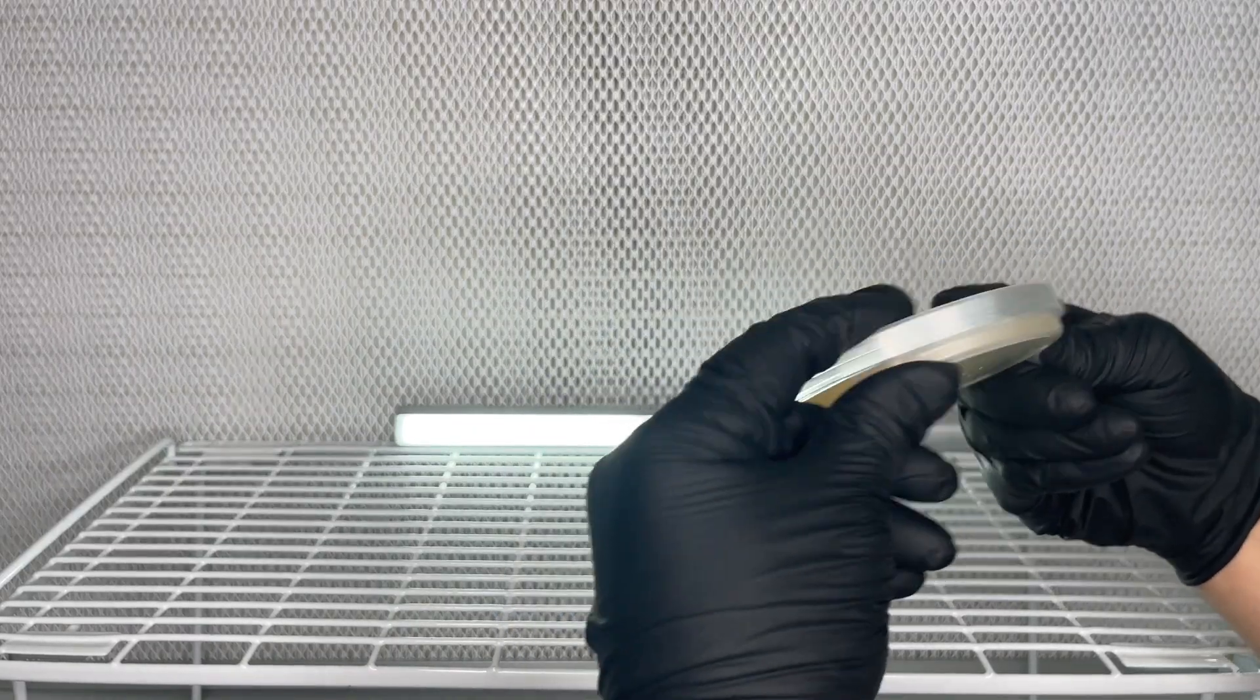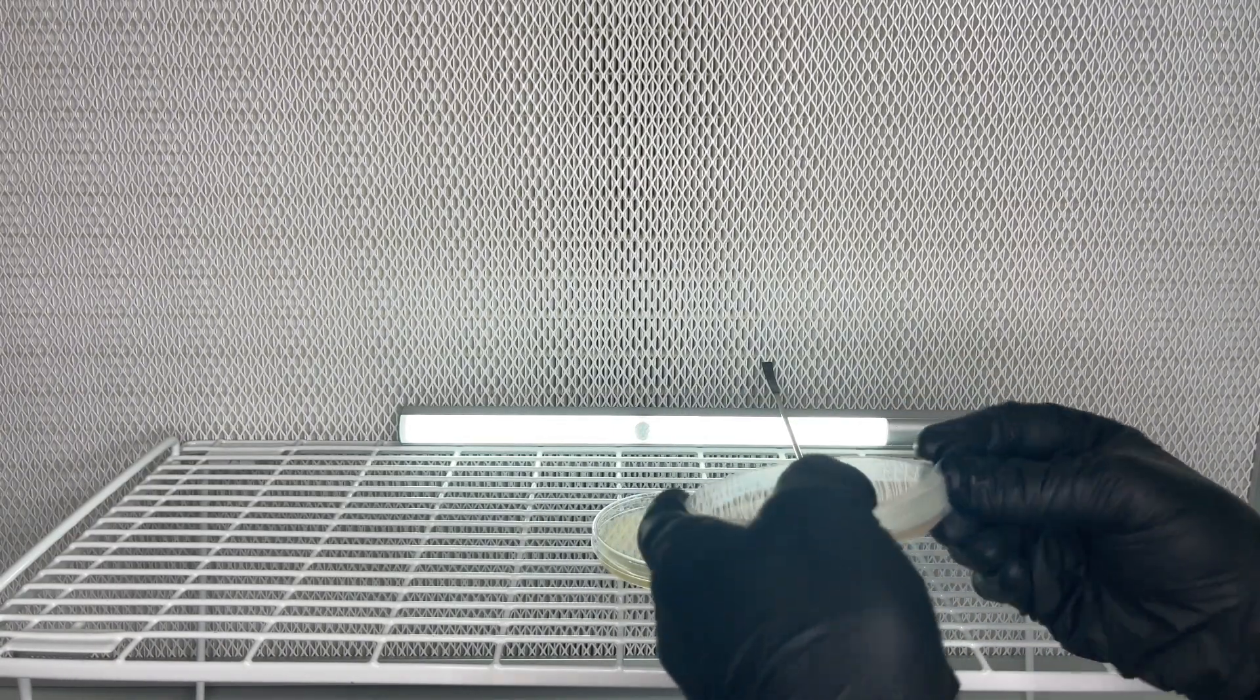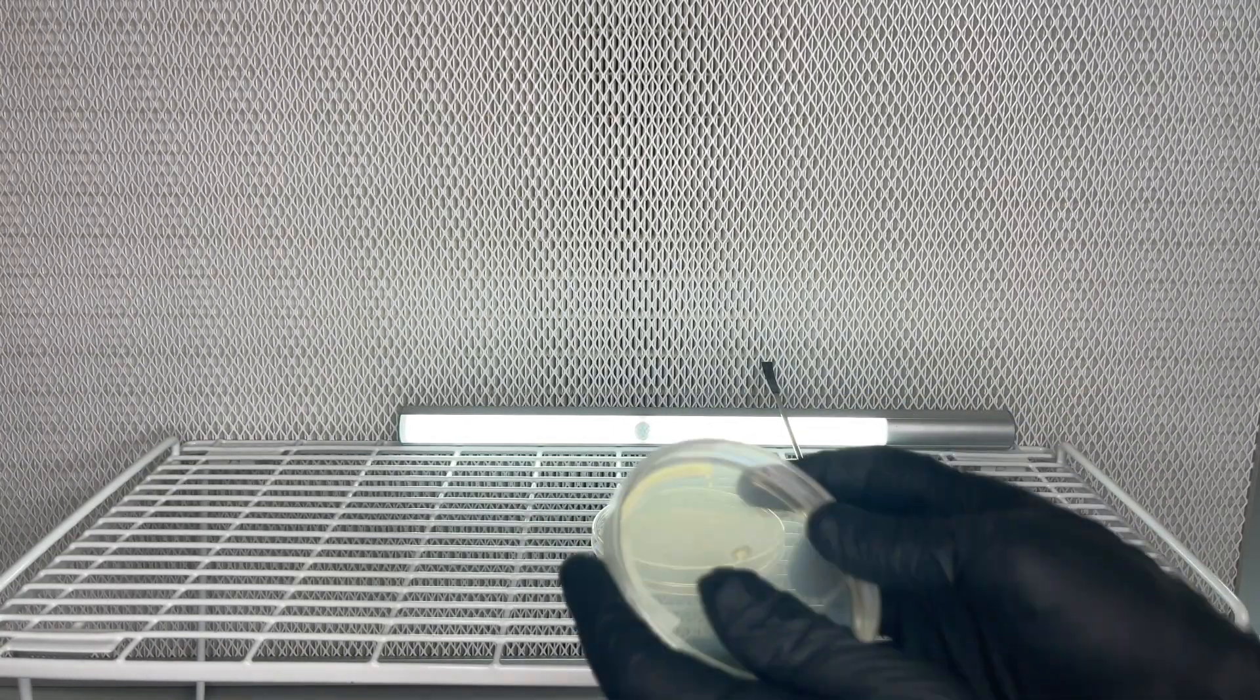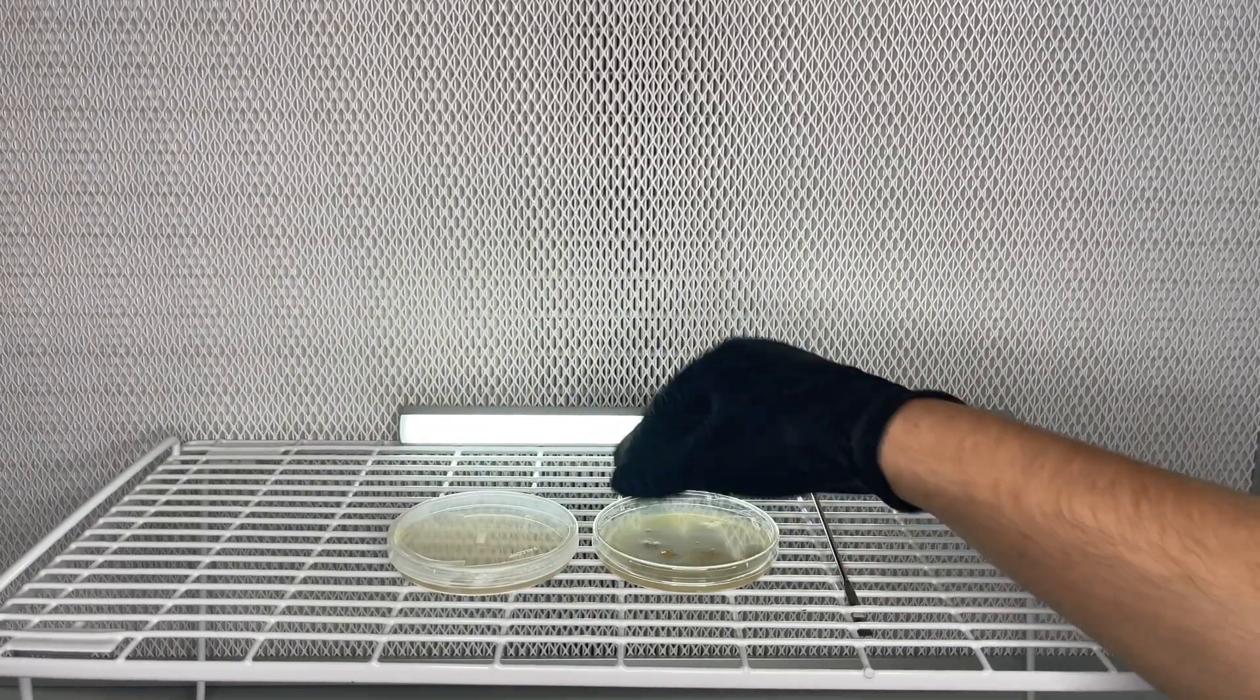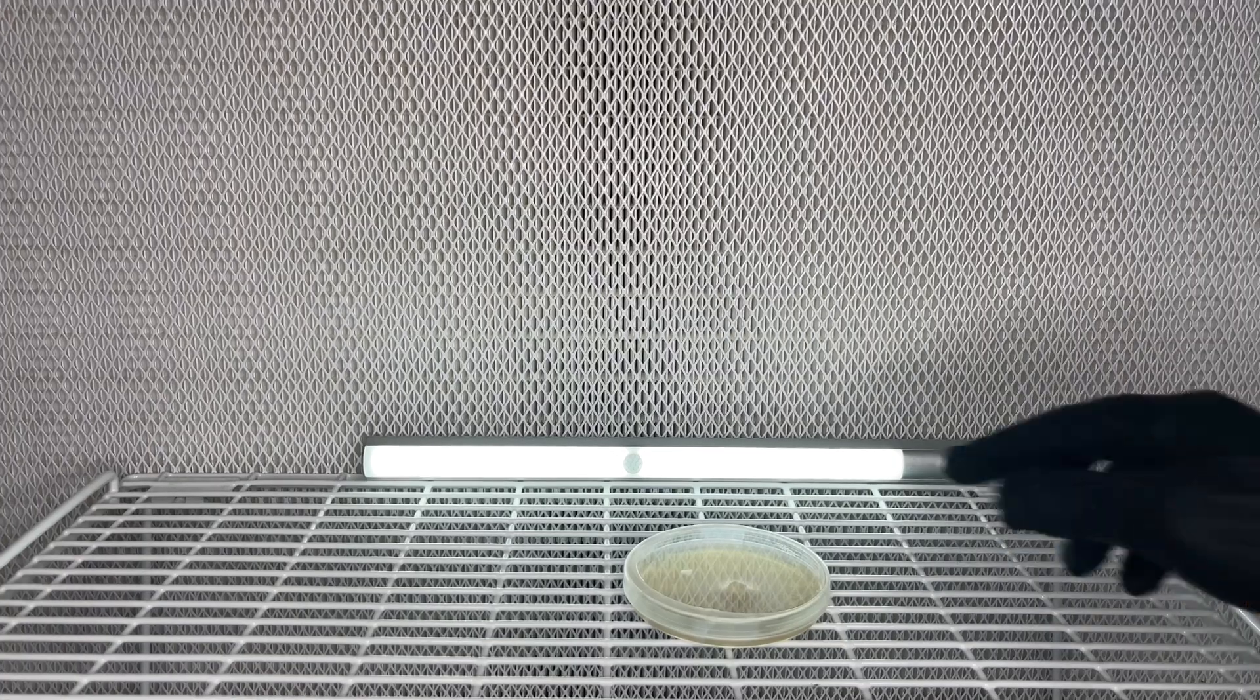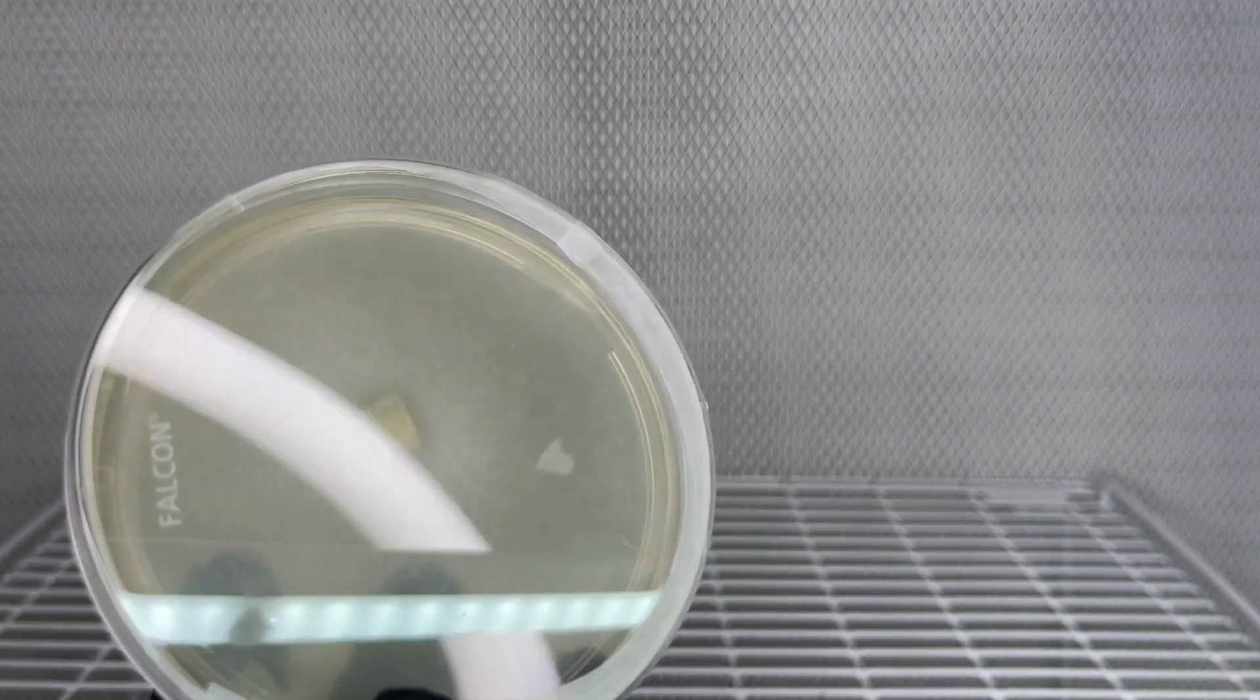And that's how you can save a contaminated mushroom liquid culture. Another way to use this method is to inoculate a small jar of grain with the contaminated syringe and do the same thing. Wait for the mycelium to grow up the side of the glass jar and then you'll be able to isolate it.